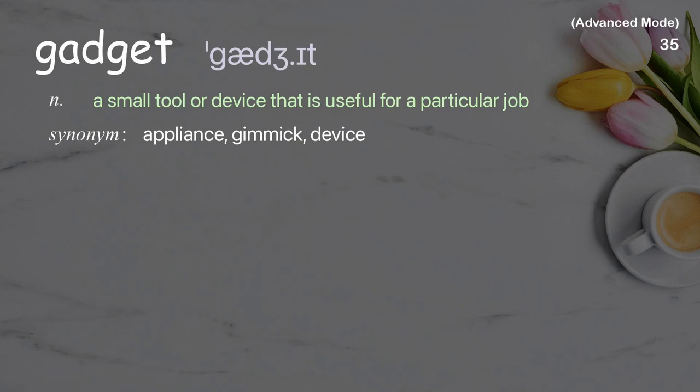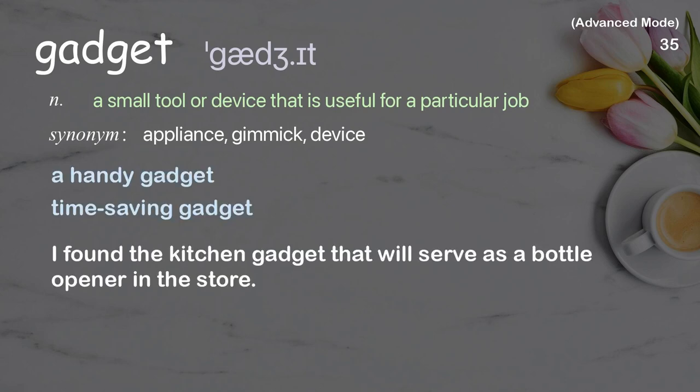Gadget: A small tool or device that is useful for a particular job. Examples: a handy gadget, time-saving gadget, I found the kitchen gadget that will serve as a bottle opener in the store.